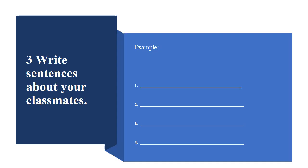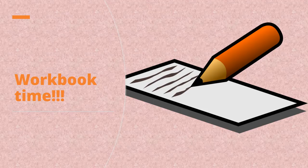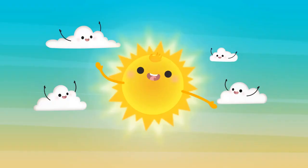Now write sentences about your classmate. You can ask your classmate questions like: What's your name? How old are you? Where are you from? What's your favorite season? Ask your friends and write the answers. You have four lines to write four sentences. Remember to do it by yourself!